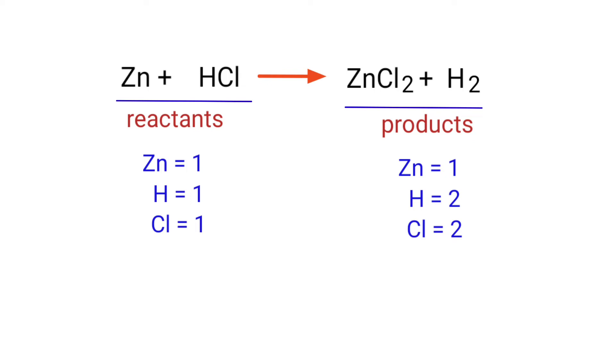The number of atoms are not balanced on both sides. To balance the chemical equation, we need to make use of coefficients. A coefficient is a number that we place in front of a chemical formula.